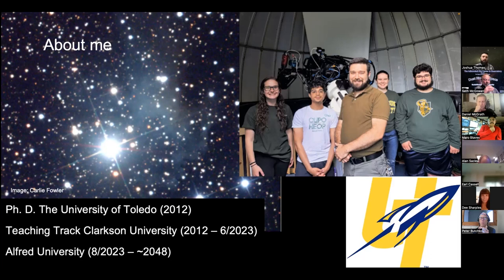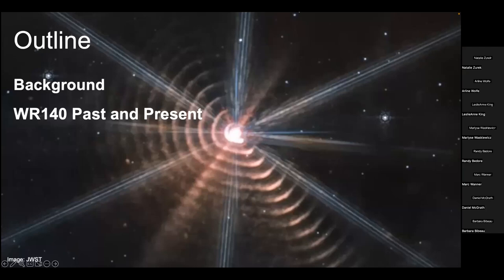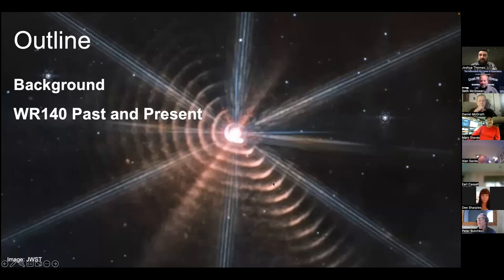For our talk, the obligatory outline slide for academics. We're talking a lot about background, and then we'll move on to WR-140 and what it is and how it fits into all of this. You'll notice these ring-like structures related to the star. But you'll also notice this bluish snowflake pattern. There's six of these, and that's caused by the support structure for the secondary mirror of James Webb.